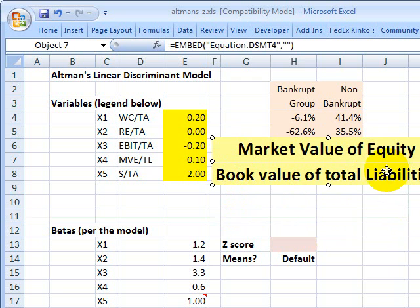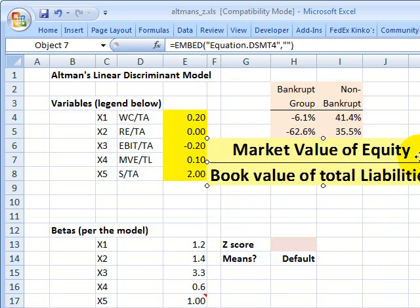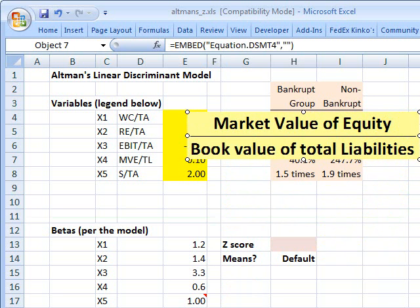The fourth measure has much in common with a structural approach to credit risk, market value of equity divided by book value of total liabilities. As the numerator gets smaller and smaller, the company has less of an equity cushion in order to fund the liabilities. So this is a classic structural look at the solvency of the company.